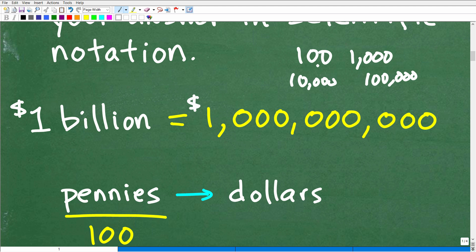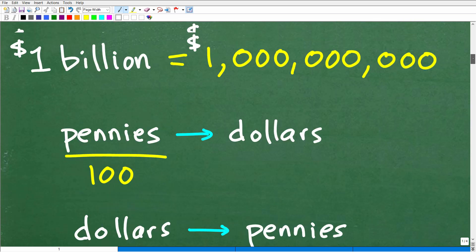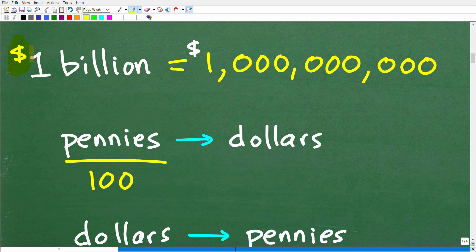If you get confused on this, just start writing these numbers out. That's a hundred, that's a thousand, 10,000, 100,000. Keep adding zeros until you reach the billion category. The next step is we want to know how many pennies are in a billion dollars. We need to know how many pennies are in a dollar. There are 100 pennies in one dollar.